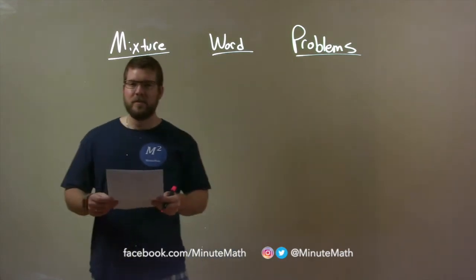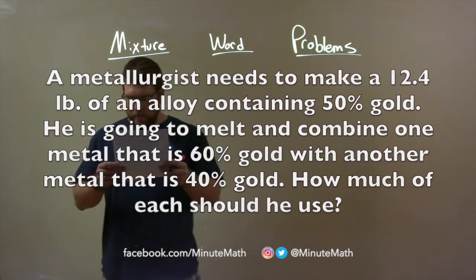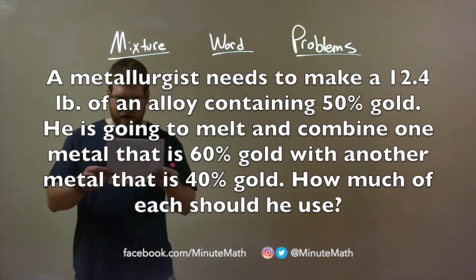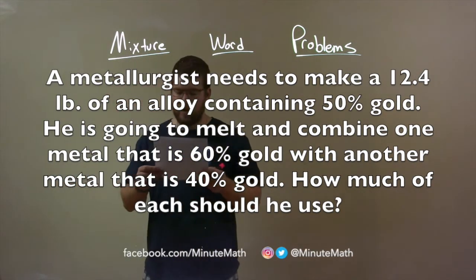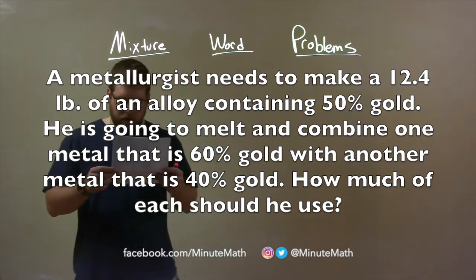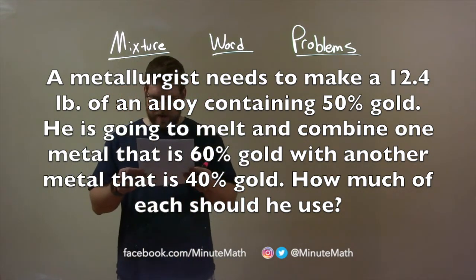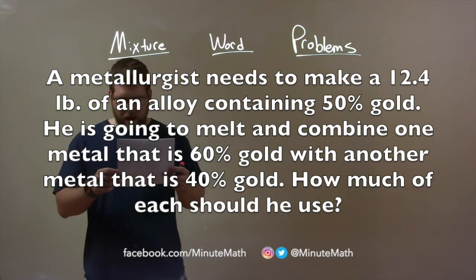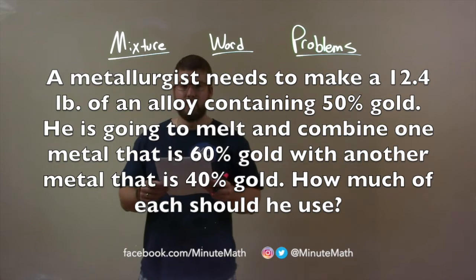So, if I was given this problem: a metallurgist needs to make 12.4 pounds of an alloy containing 50% gold. He is going to melt and combine one metal that is 60% gold with another metal that is 40% gold. How much of each should he use?